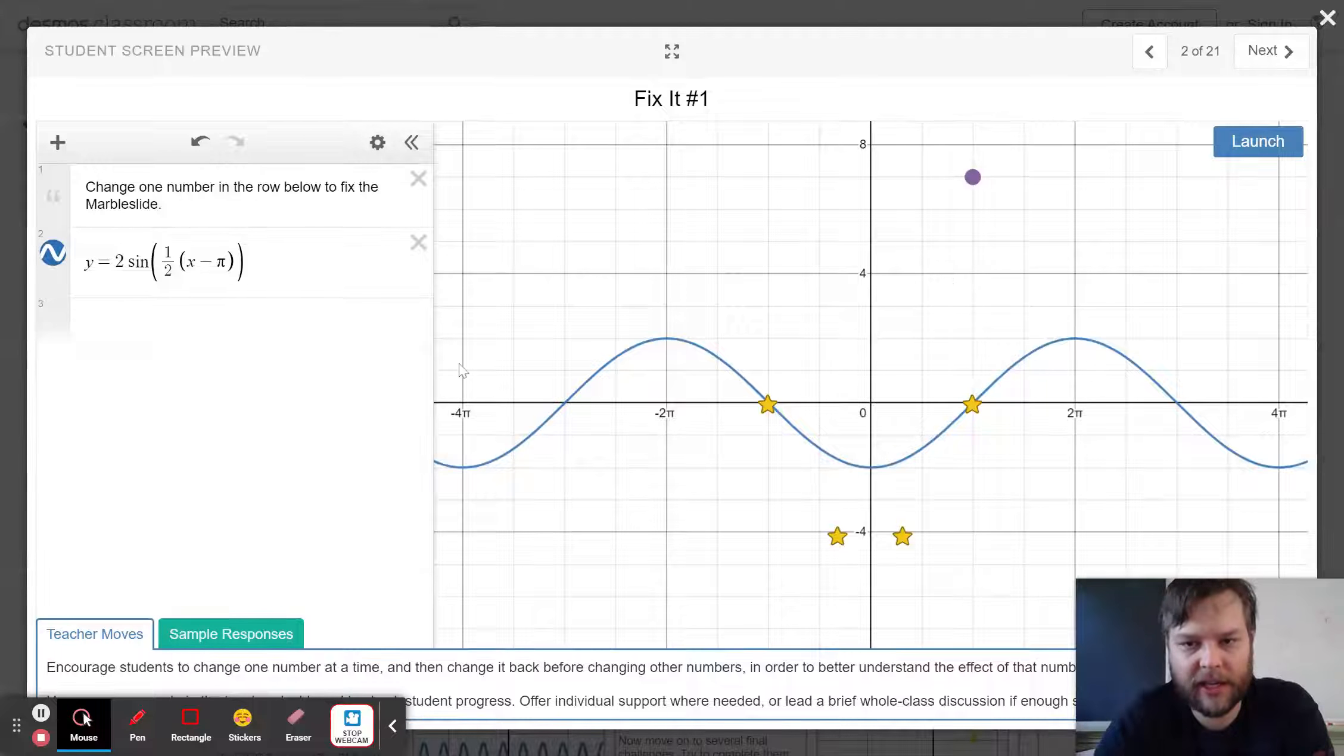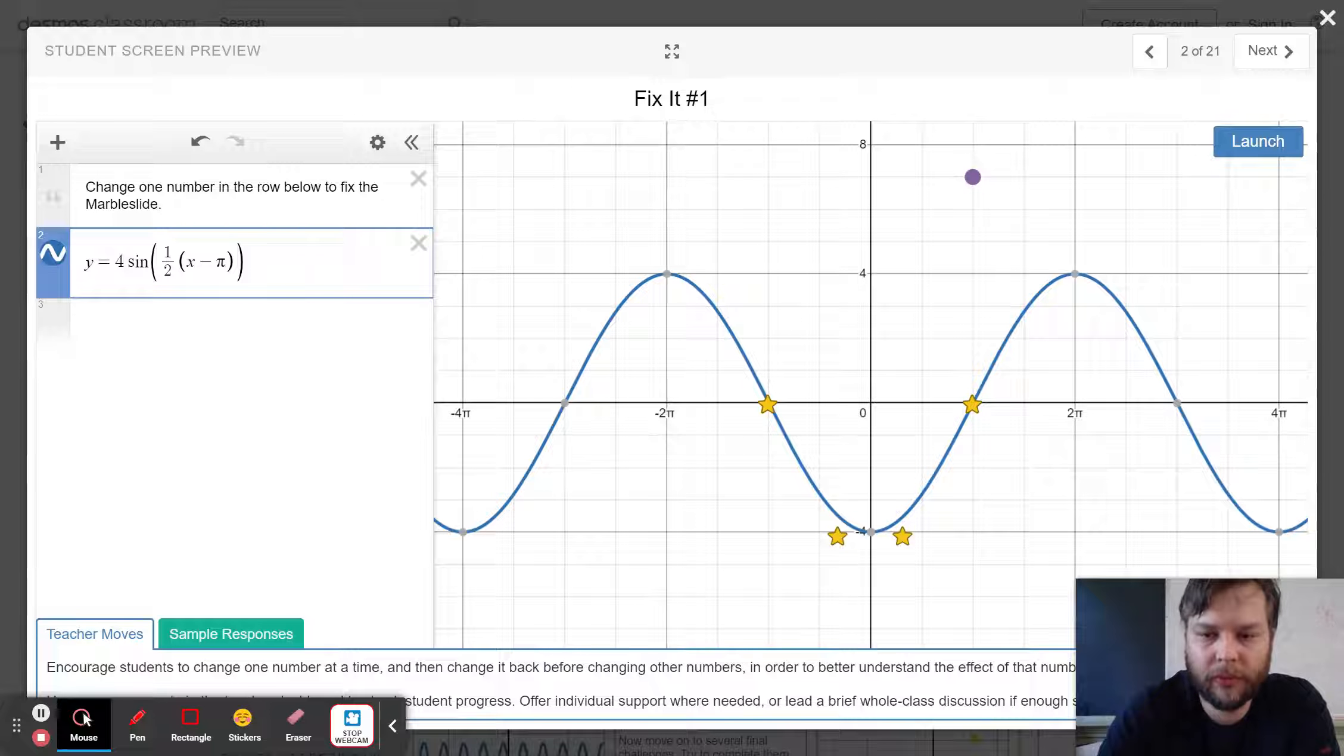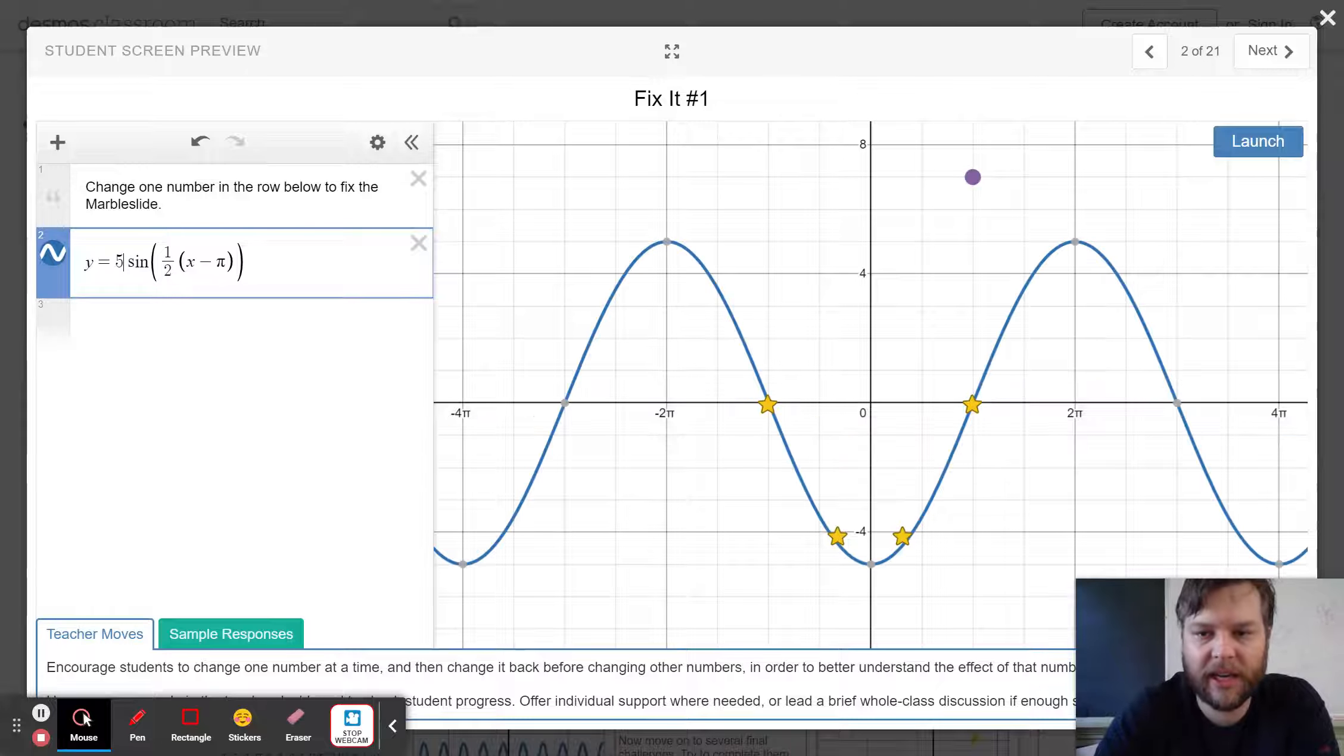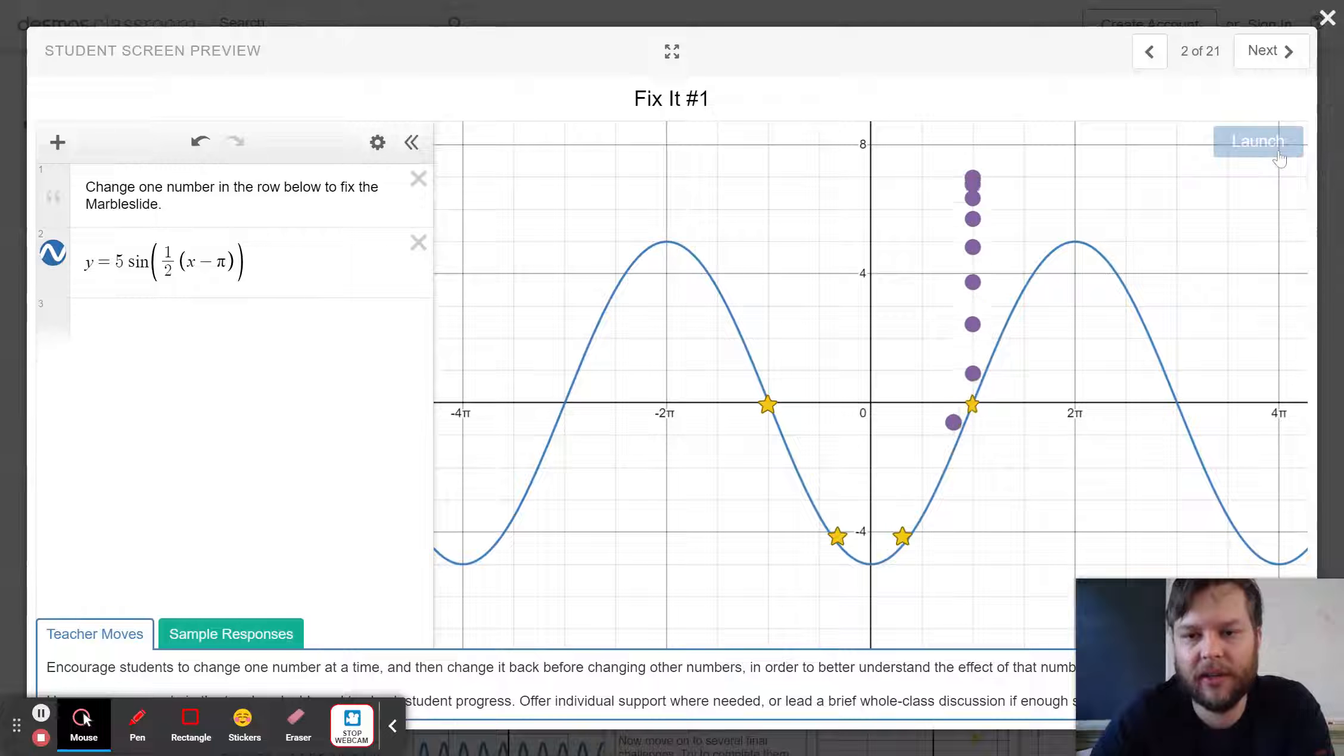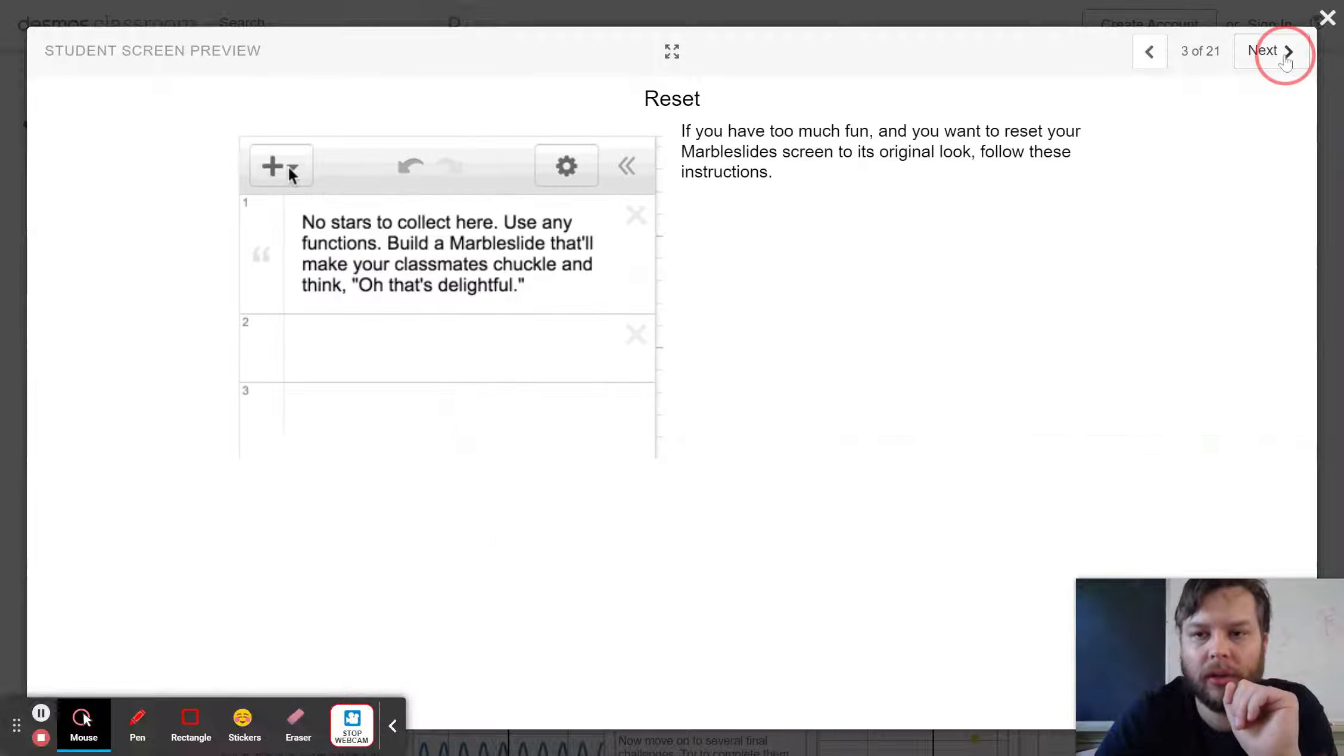When I look at this, I can see that I've got kind of the right wave, but it's not tall enough. So I'm going to change the two to a four, not quite to a five. And then it looks like I'm going to get all the stars there. So the number in front of your function is your amplitude, making it taller or shorter.